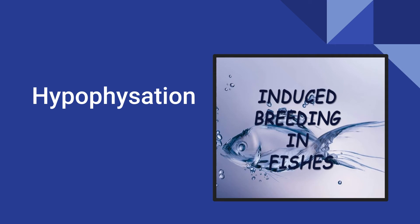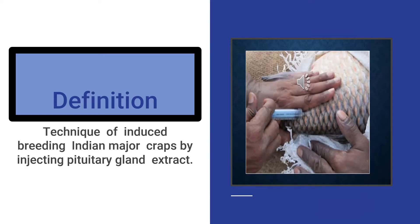Hi guys, today we are going to see the topic hypophysation, or induced breeding in fishes. Hypophysation is the technique of induced breeding in Indian major carps by injecting the pituitary gland extract, or making the fish spawn by an artificial method. This is called induced breeding.